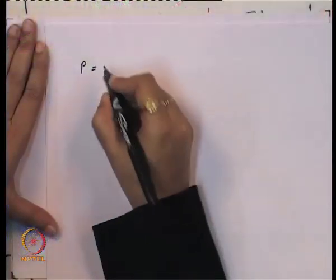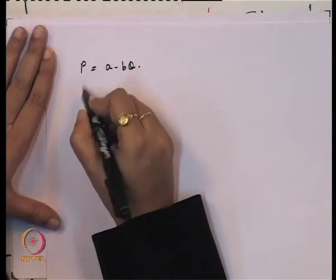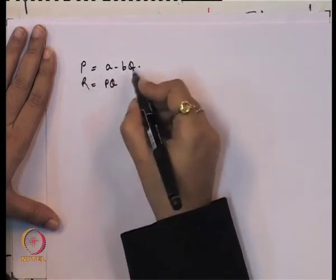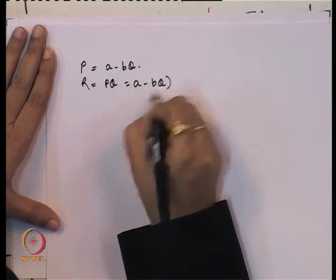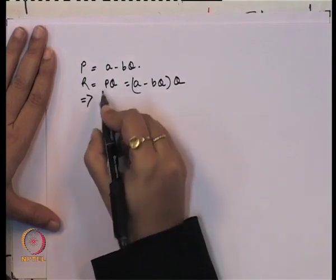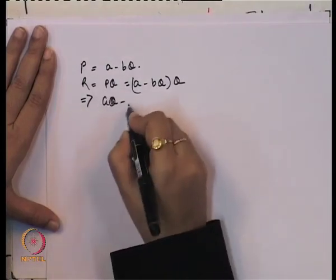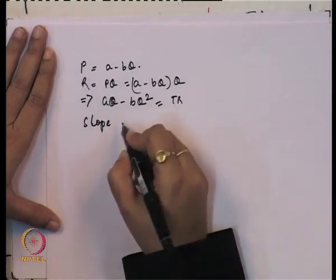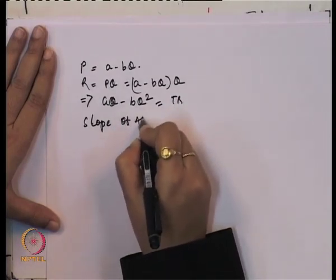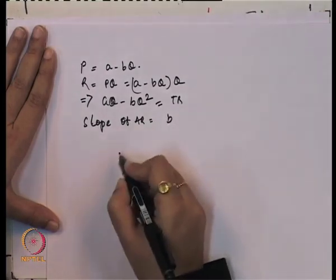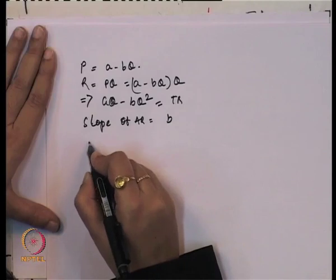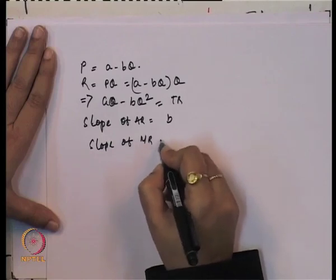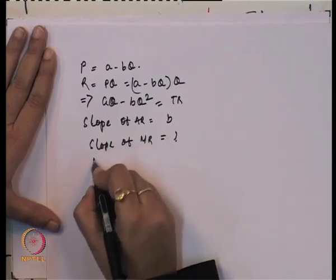If we take a demand curve P = A − BQ, then total revenue is P·Q = (A − BQ)·Q = AQ − BQ². The slope of the average revenue curve is B, since AR = TR/Q. Now we need to find the slope of marginal revenue, which is dTR/dQ.